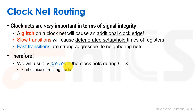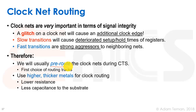We're going to do a routing stage during CTS just for the clock nets, where we have first choice of all the routing tracks. None of the routing tracks are taken except for the pre-routes we did for power and so forth. Second, we're going to use higher and thicker metals for clock routing because they have lower resistance and less capacitance to the substrate.